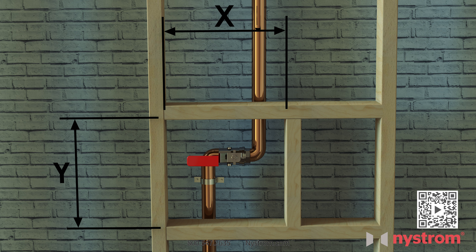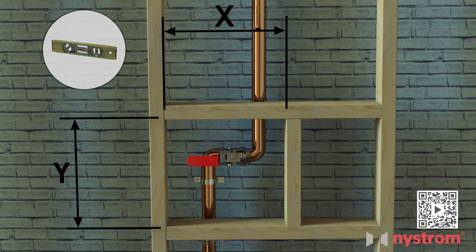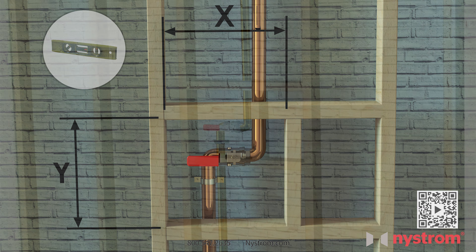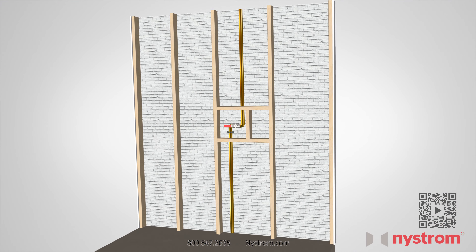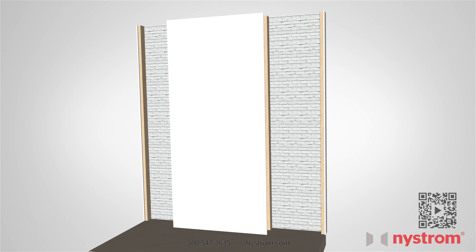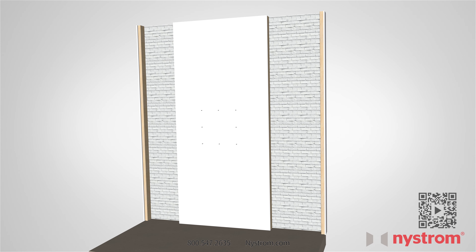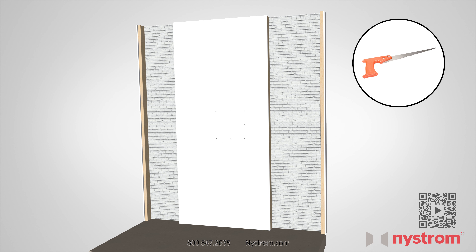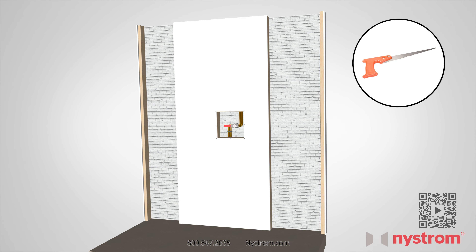Install the wall frame to fit the dimensions as required for your access door. Double check with a level and make sure your framing is leveled. Next, install drywall as needed using the appropriate fasteners for your project. Using a keyhole saw, cut the opening for the access panel.